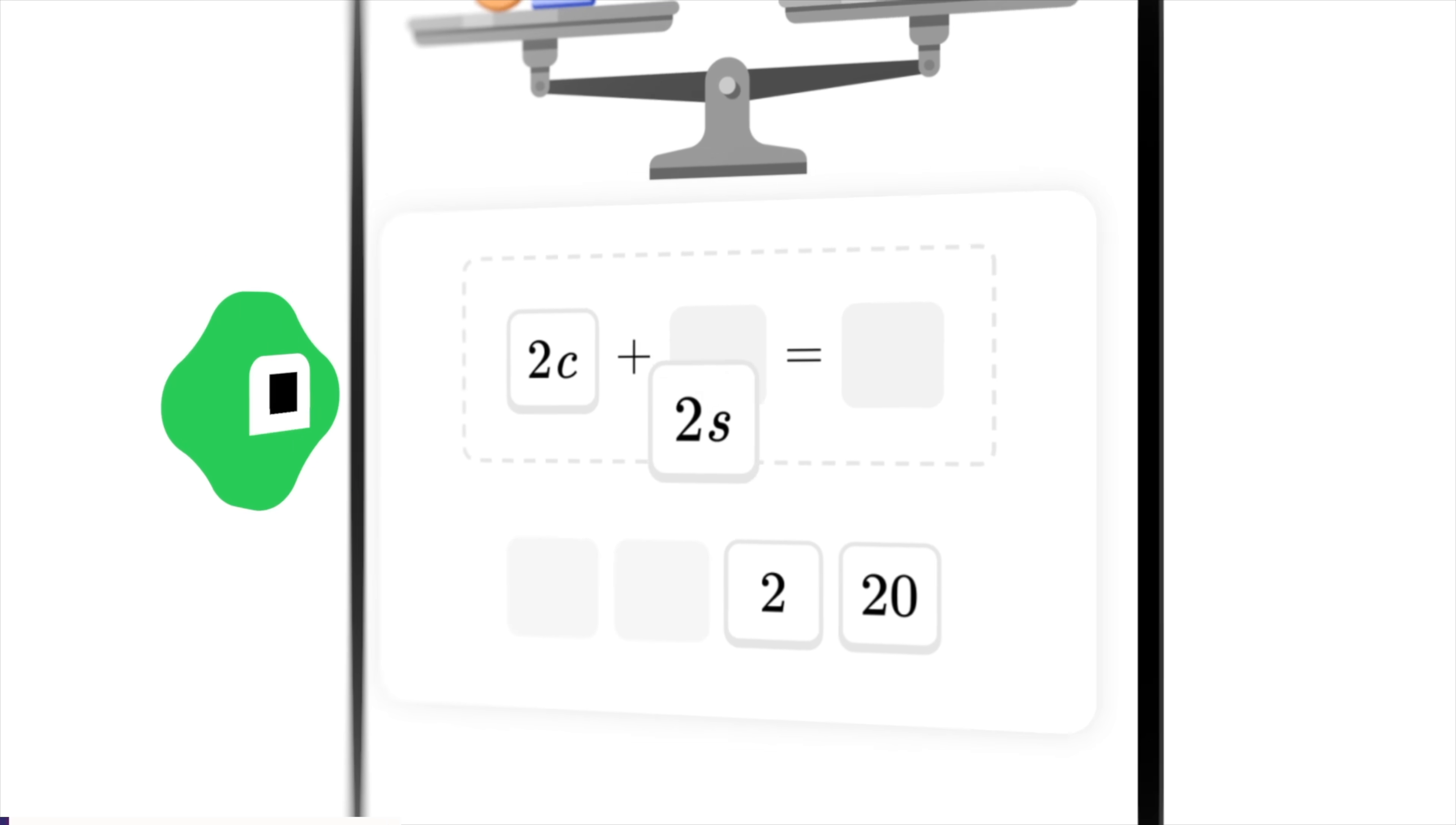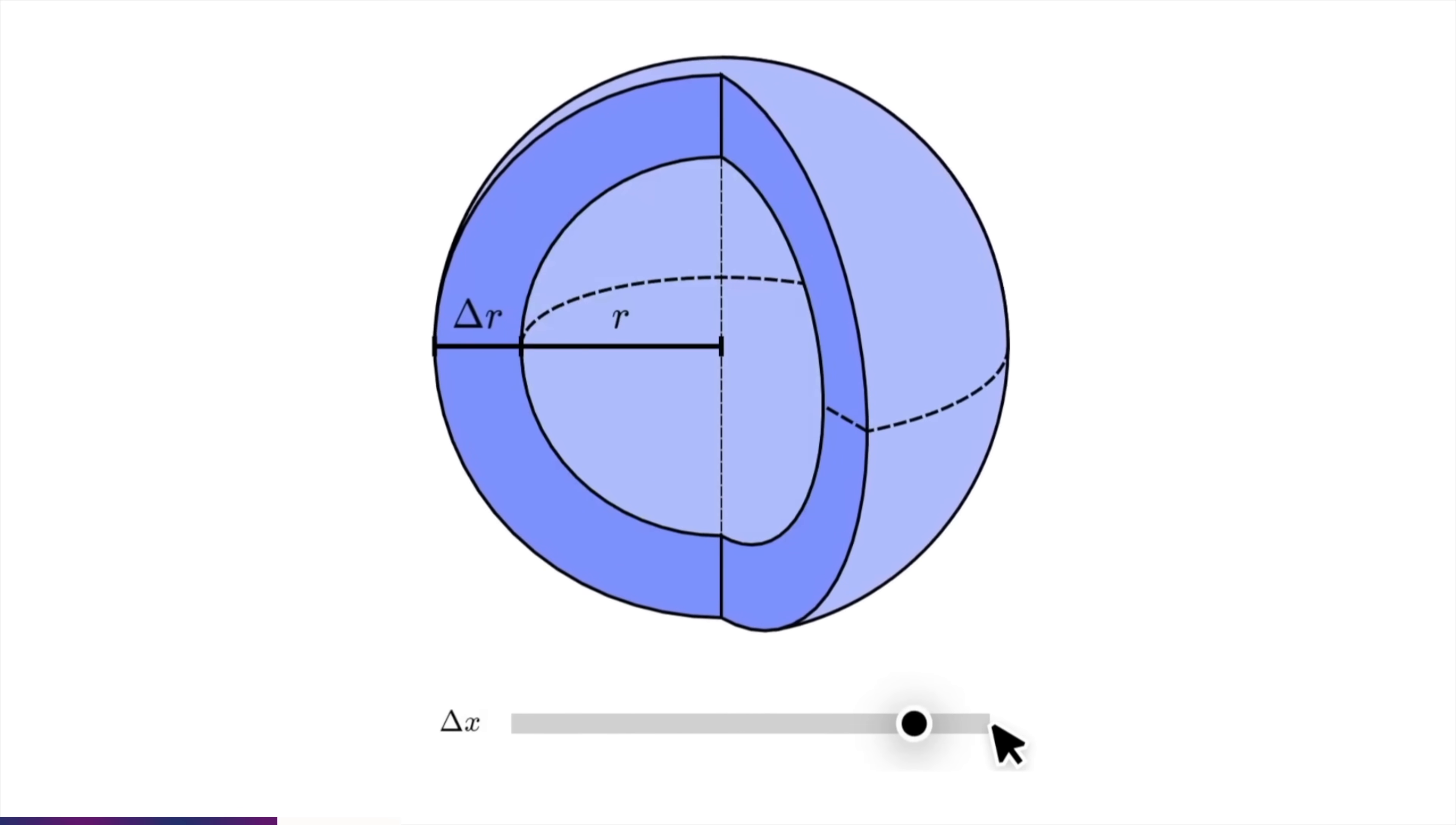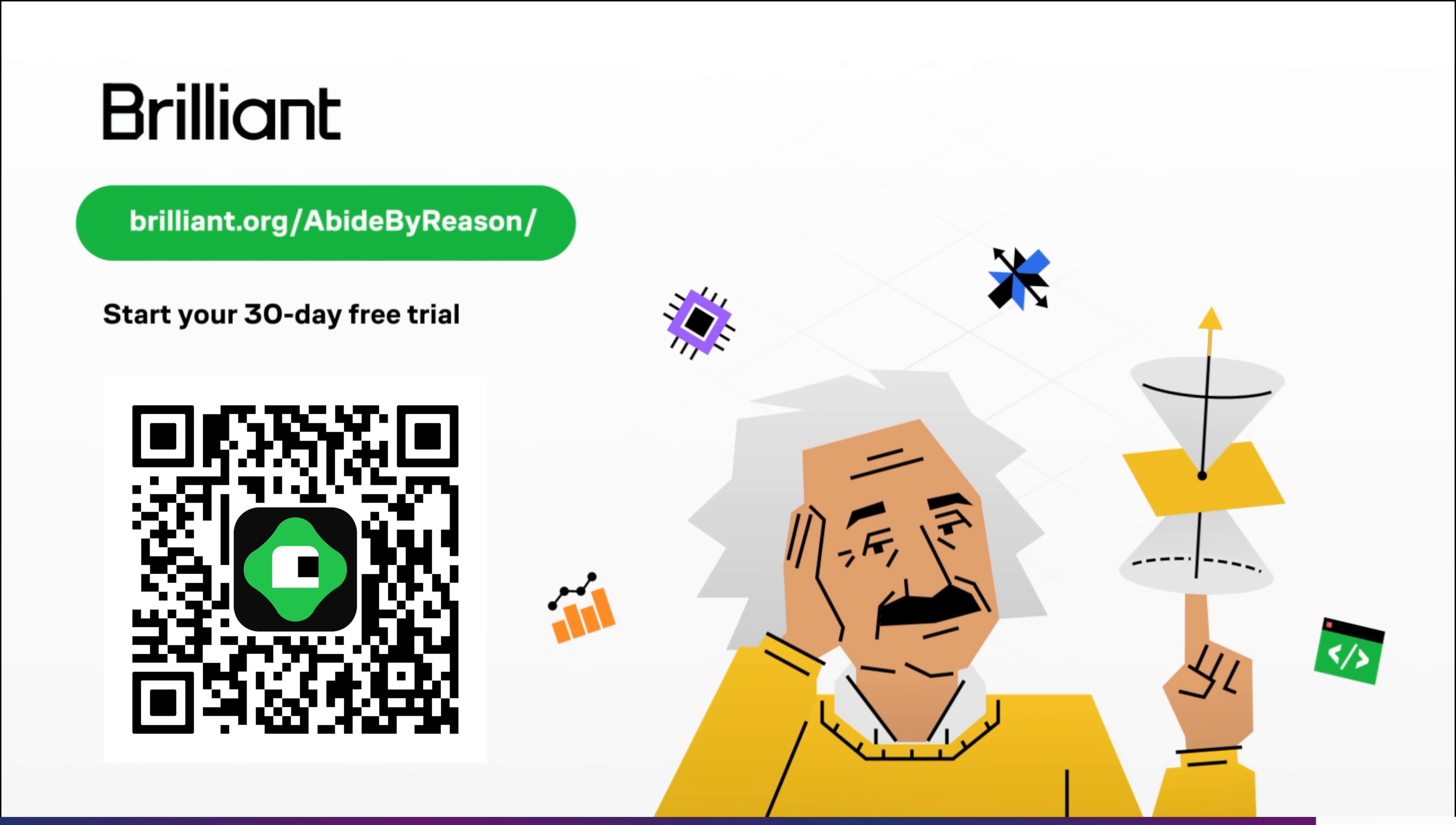This video has been covering some pretty heavy math concepts. If you're looking for a place to learn some more interesting math, a great place to start is this video's sponsor, Brilliant.org. Whether you're looking to learn more higher math like linear algebra or group theory, or just trying to brush up on your calculus knowledge, Brilliant has you covered. Their lessons are organized into neat levels that really build up your intuition on a topic. To try all this and more for free for a full 30 days, visit brilliant.org/abidebyreason, or click on the link in the description. You will also get 20% off an annual premium subscription.